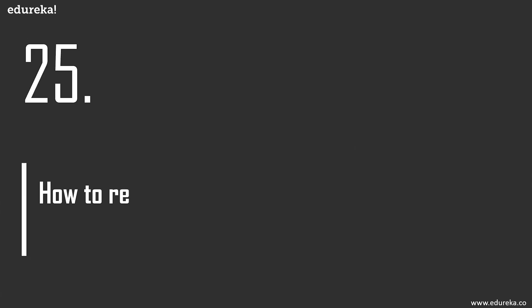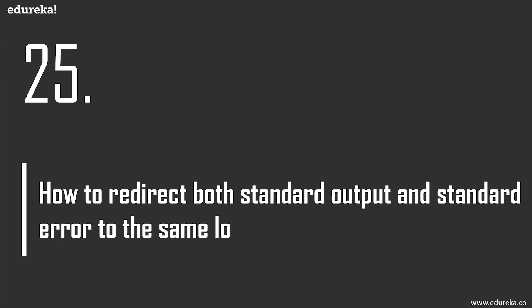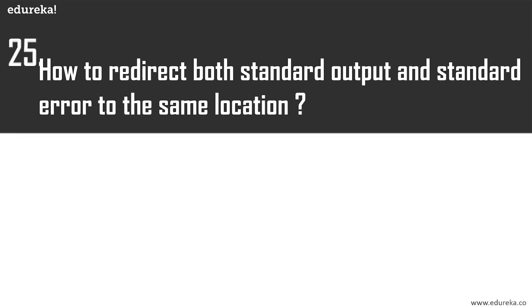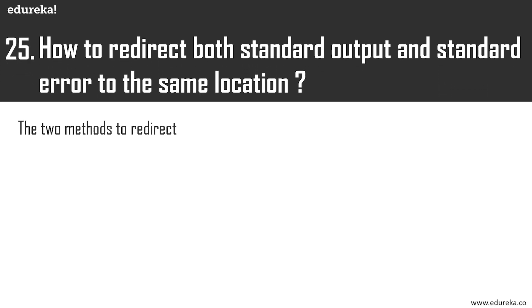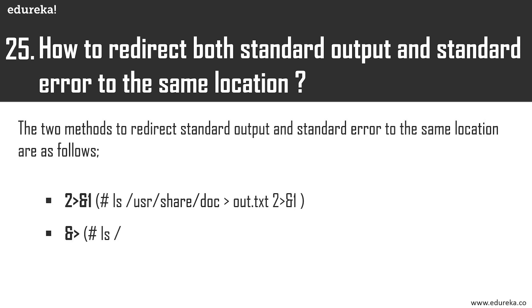How do you redirect both standard output and standard error to the same location? There are two methods to redirect both to the same location, demonstrated by two commands on screen that achieve this redirection.